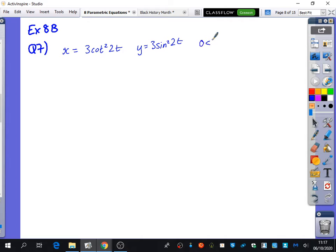And it says that t is between 0 and pi over 4. But we'll worry about this bit in a second, because the first thing it wants us to do is to find a Cartesian equation in the form y equals f of x.